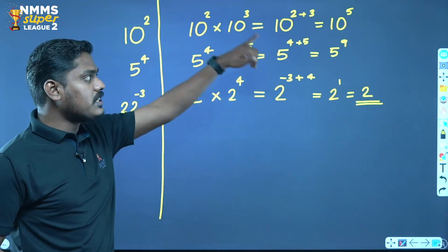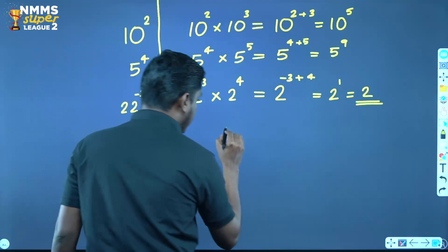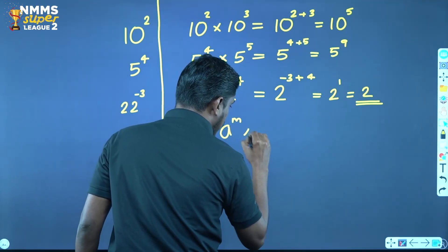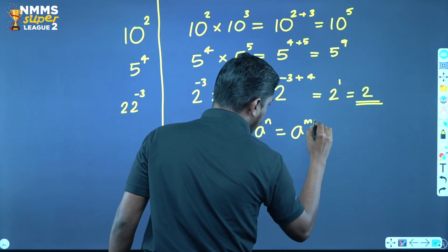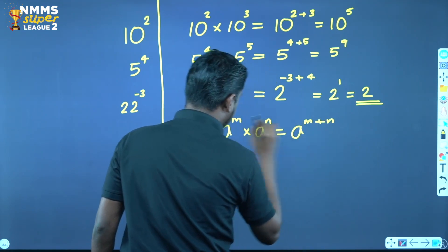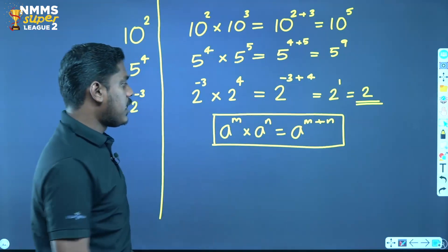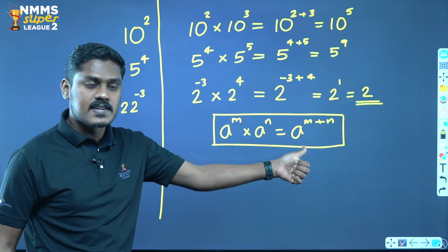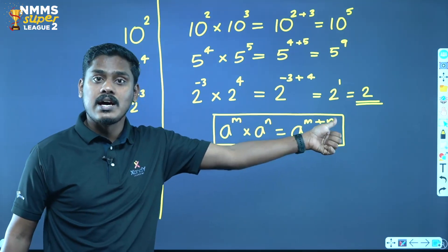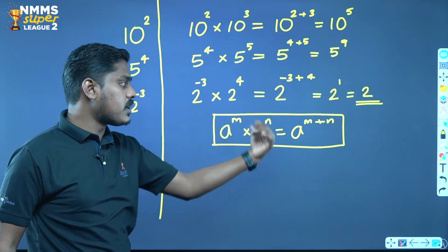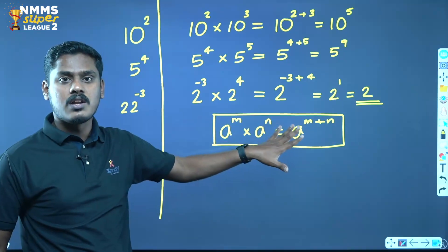The multiply rule: a raised to m into a raised to n is equal to a raised to m plus n. Same base, two exponents m and n — a raised to m into a raised to n is equal to a raised to m plus n. That's the basic rule.